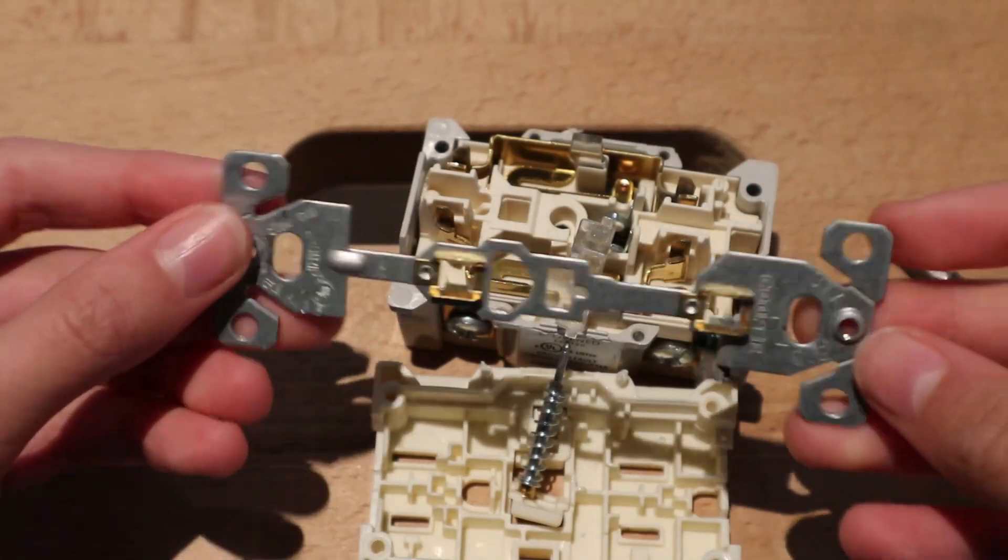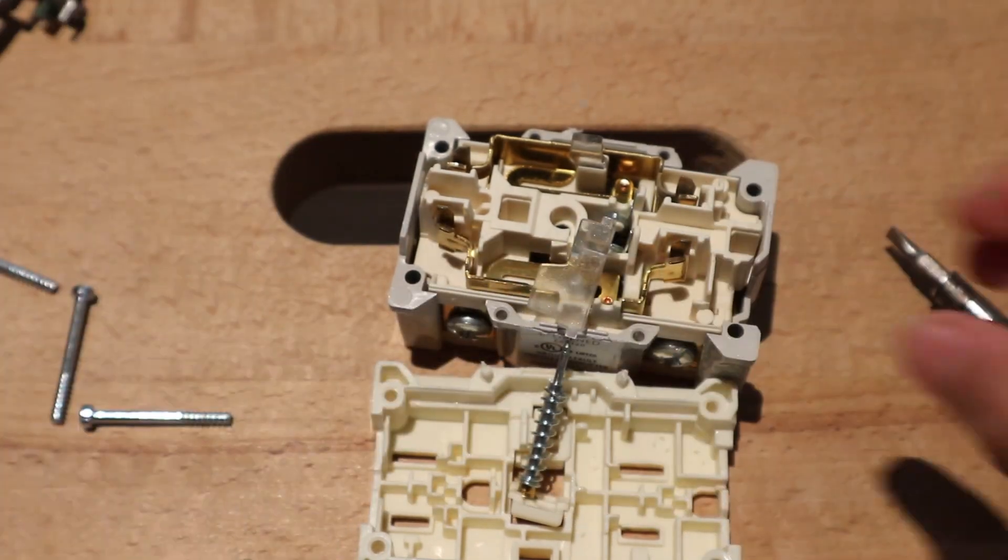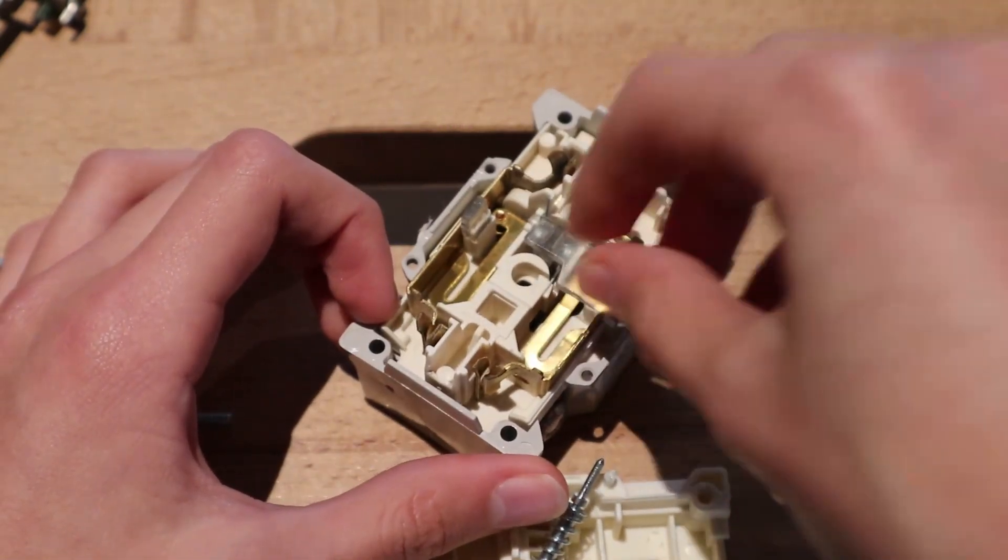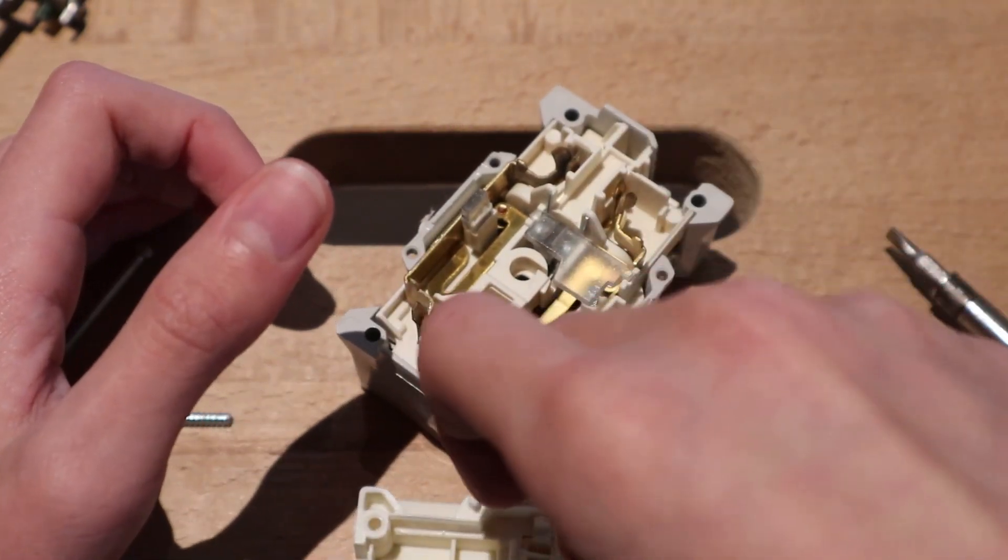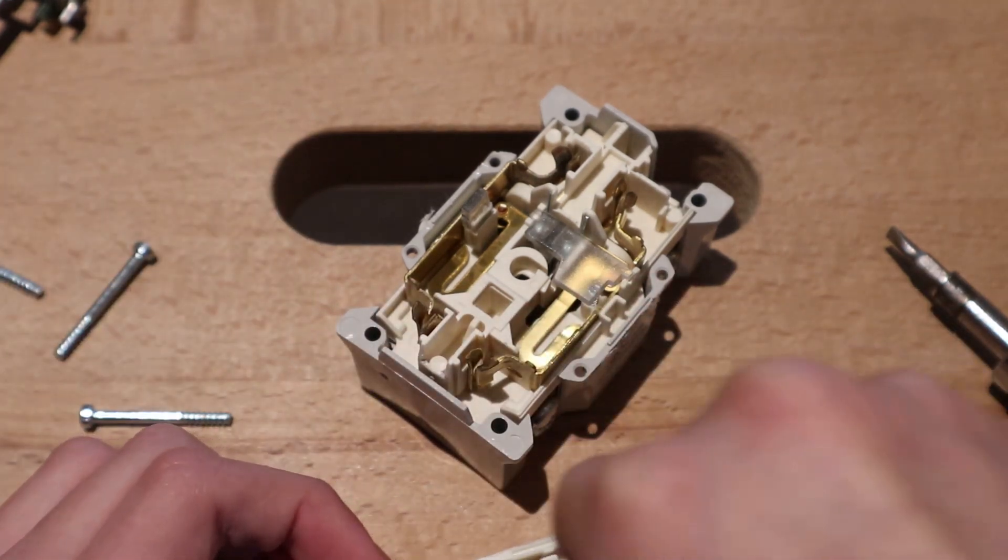This is the grounding terminal, I think. A clear plastic piece. I think what's inside here fell out. How does this work?